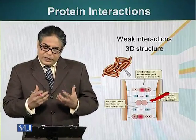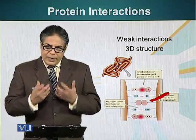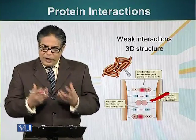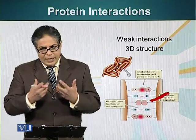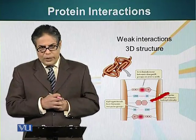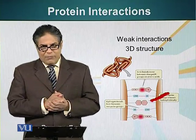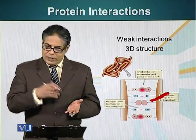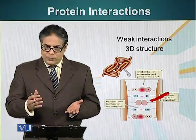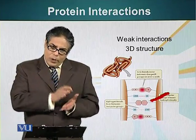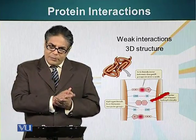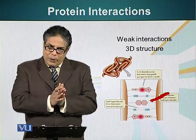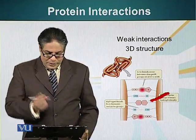All these interactions are very weak, but because their number is great, these weak interactions can stabilize the interaction of two proteins. Just as you are familiar with Velcro, it is based on weak interactions but many, many interactions that make it possible for two things to bind together. It is the same principle.